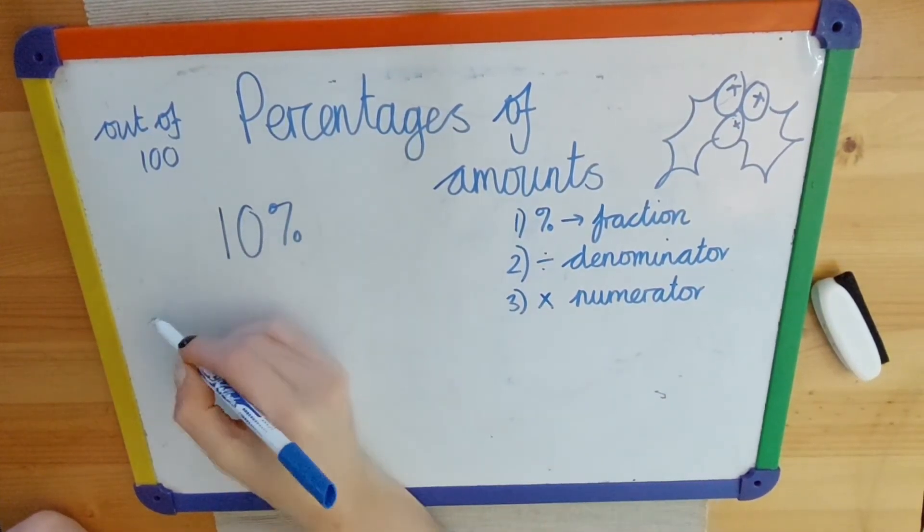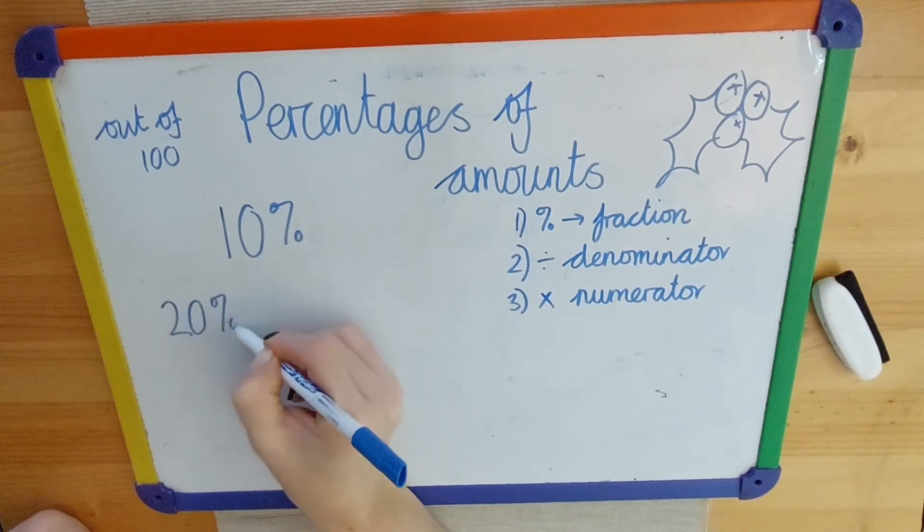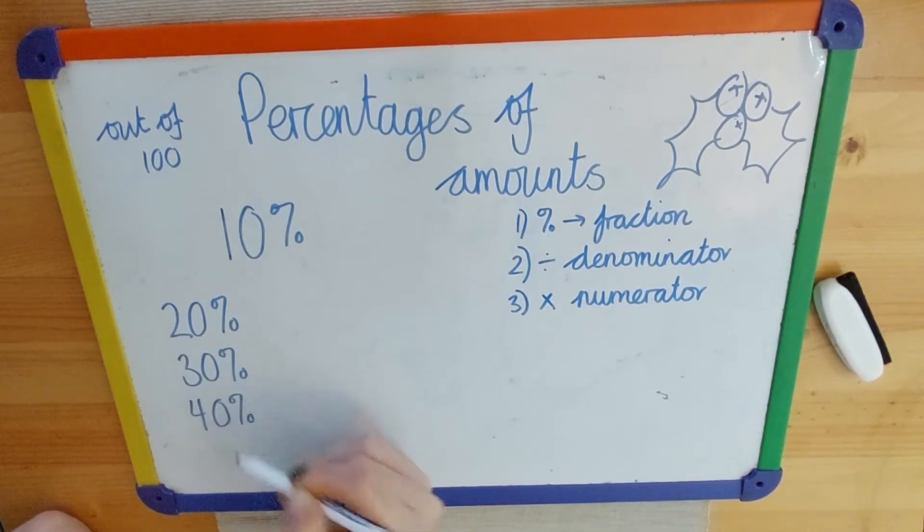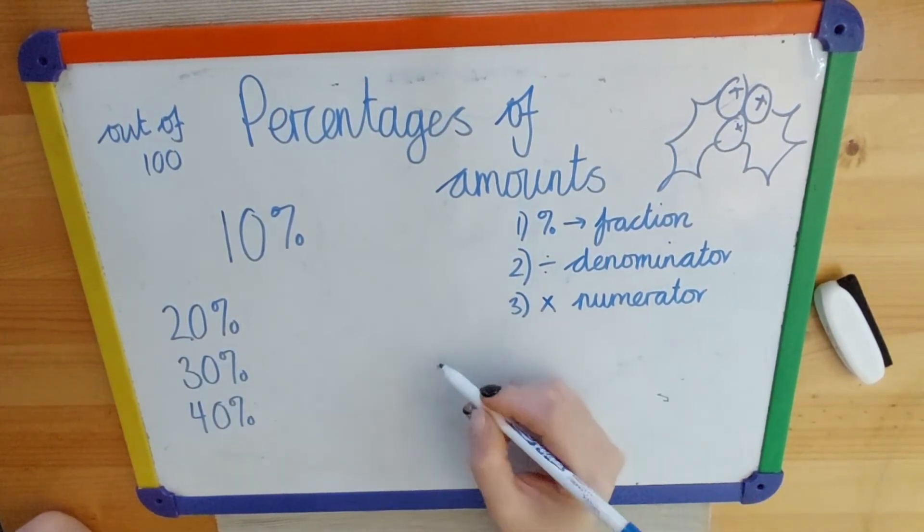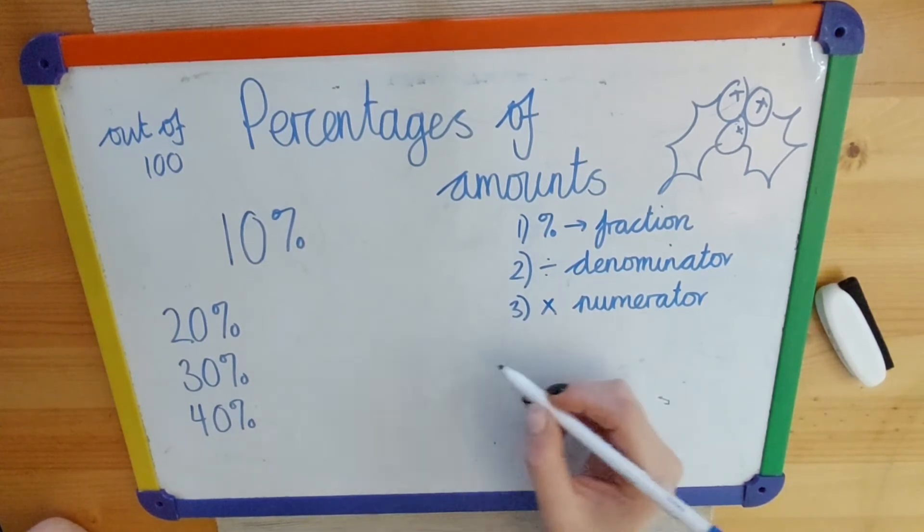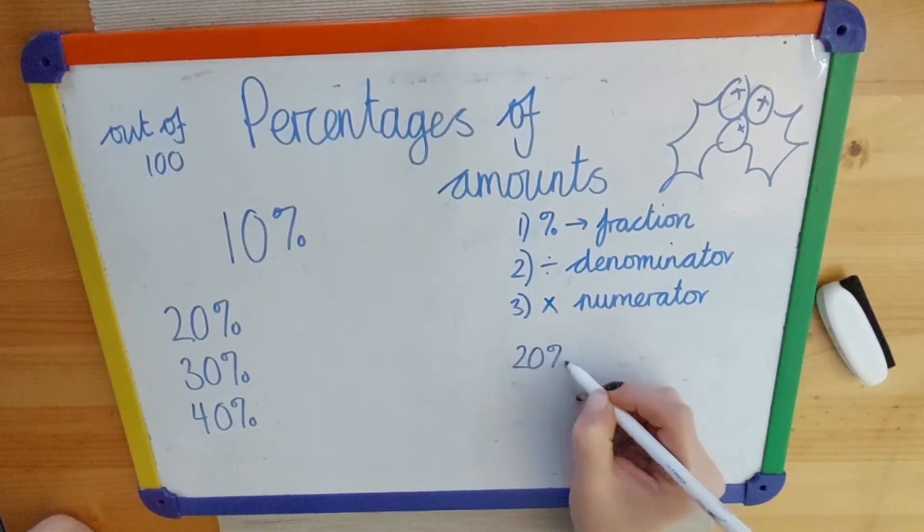Again, you can use your knowledge of finding 10% to work out any multiple of 10, so 20%, 30%, 40%, and so on.